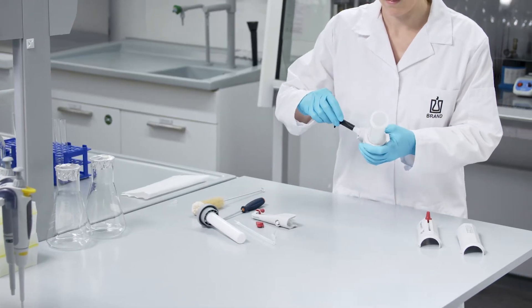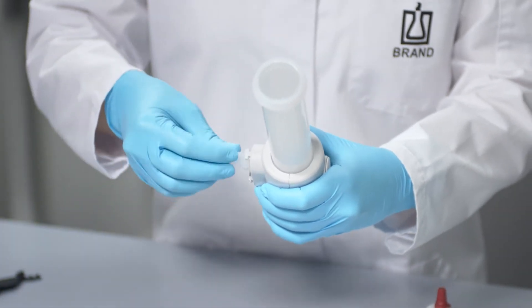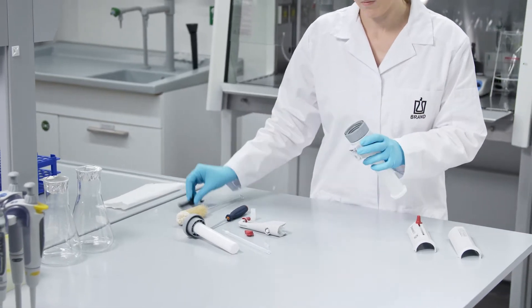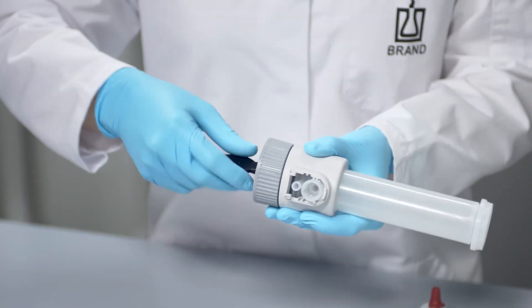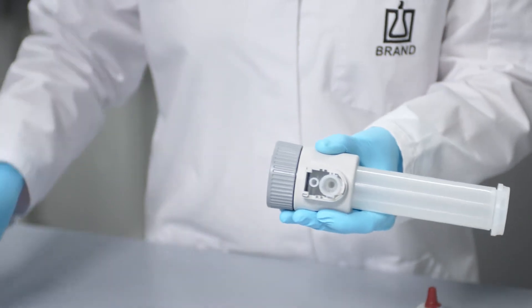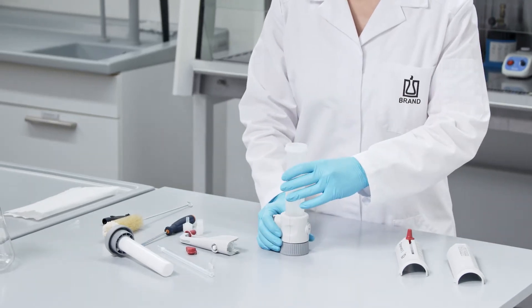Remove the discharge tube. Then use the mounting tool to unscrew the discharge and filling valve. You should not disassemble your Dispenset S any further.